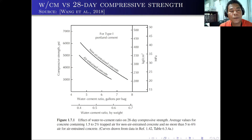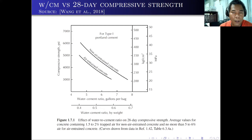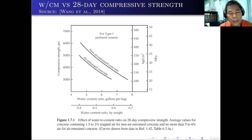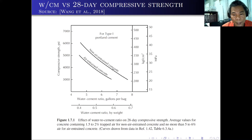Here is the diagram for the water-cement ratio versus the 28-day compressive strength of the concrete. As you can see, this is the effect of the water-to-cement ratio on the 28-day compressive strength. If we are talking about the non-air-entrained concrete, we plot the water-cement ratio by weight. So if we use 0.6, the corresponding compressive strength is around 26 MPa.